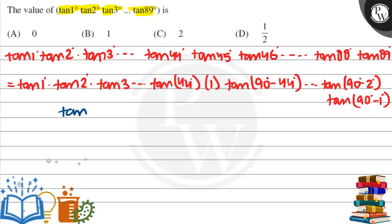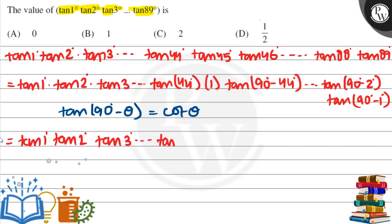Now we know one thing: we know tan 90 degree minus theta, which is cot theta. So tan 1 degree to tan 3 degree is tan 3 degree or multiplication. Tan 44 degree as it is, tan 90 minus 44 becomes cot 44 degree, and so on to cot 2 degree and cot 1 degree.